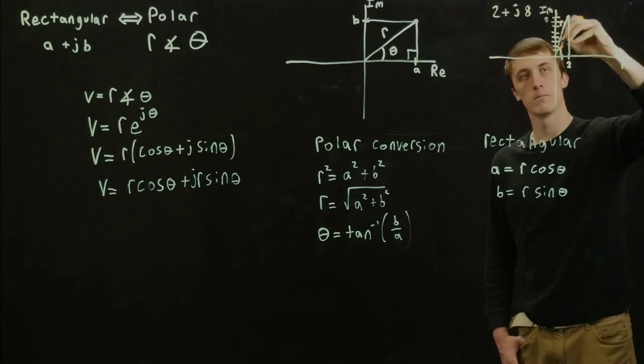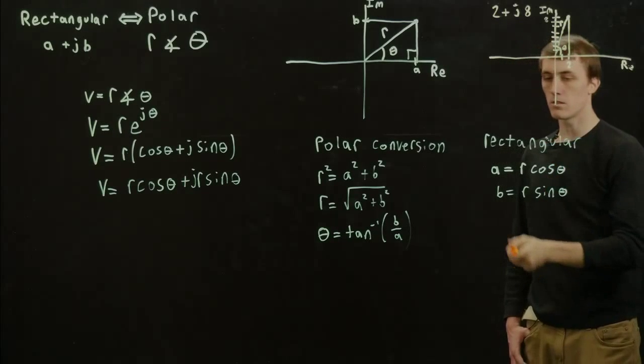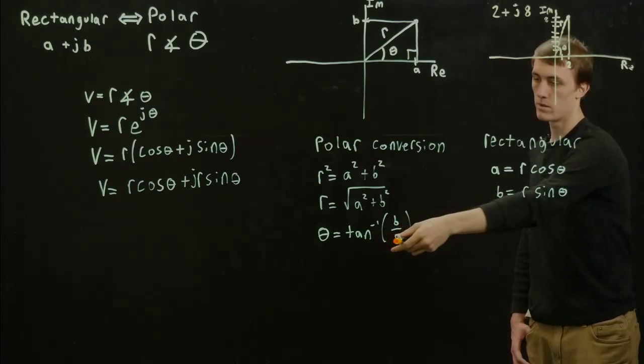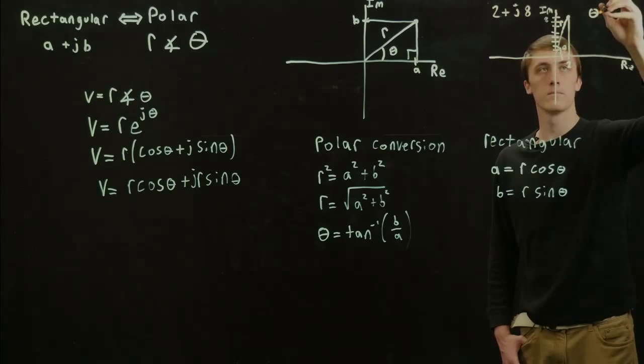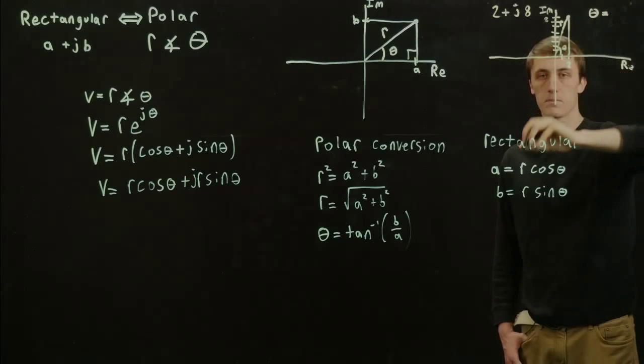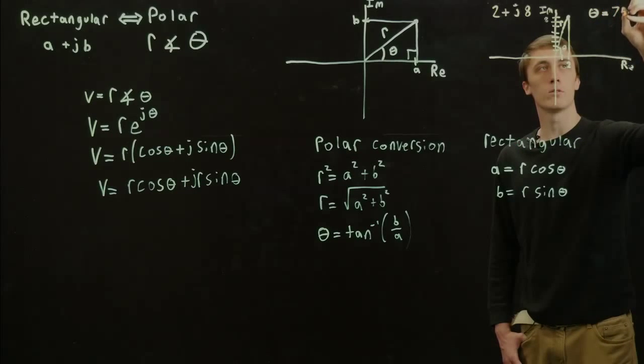theta. Using our equations with tan inverse of B over A, theta ends up equaling 75.9 degrees.